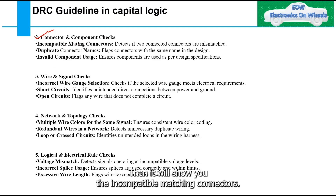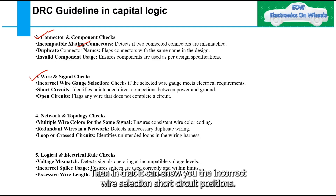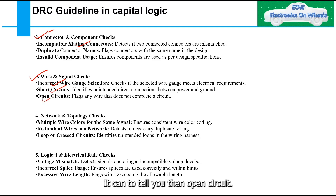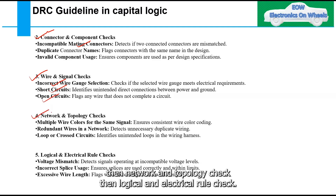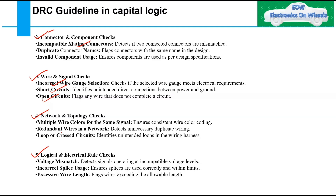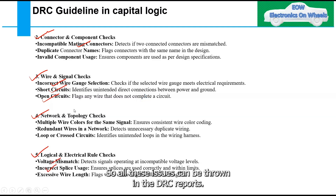Other DRC checks include connector component check — which flags incompatible mating connectors — wire and signal checks for incorrect wire gauge selection, short circuit positions, and open circuits, as well as network and topology checks and logical electrical rule checks.